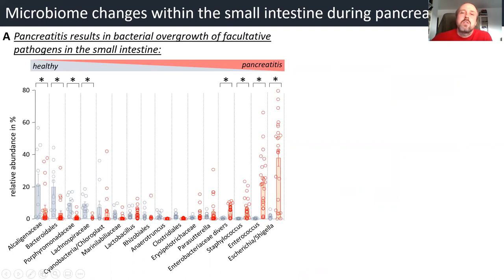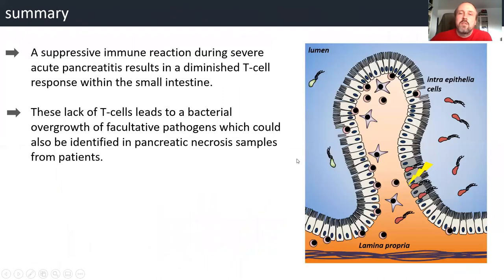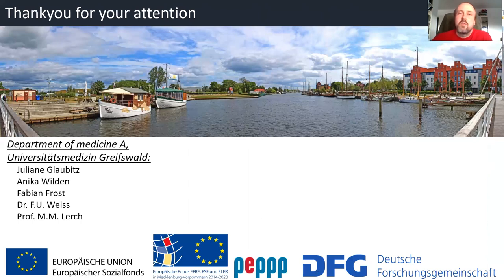If we compare our results from the mouse model with the human situation, we can see that exactly the same pathogens which we could observe in human necrosis are also growing up in the small intestine of our animals suffering from severe acute pancreatitis. Our hypothesis is that the suppressive immune reaction during severe acute pancreatitis results in a diminished T-cell response within the small intestine, and this lack of T-cells leads to a bacterial overgrowth of facultative pathogens which could also be identified in pancreatic necrosis samples. Therefore, we think that regulatory T-cells are a promising tool to target severe acute pancreatitis. Thank you very much for your attention.